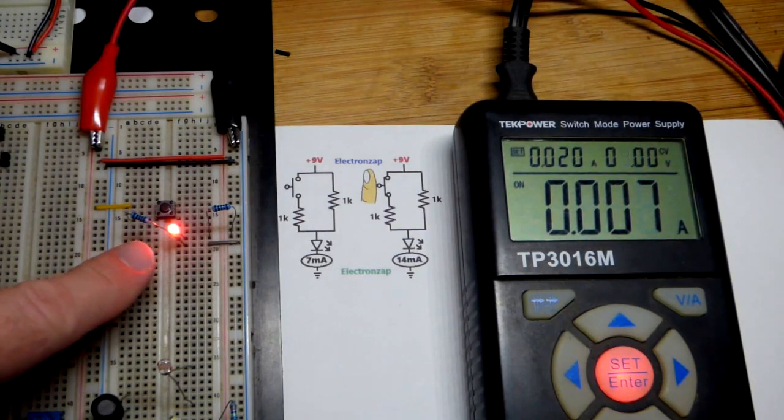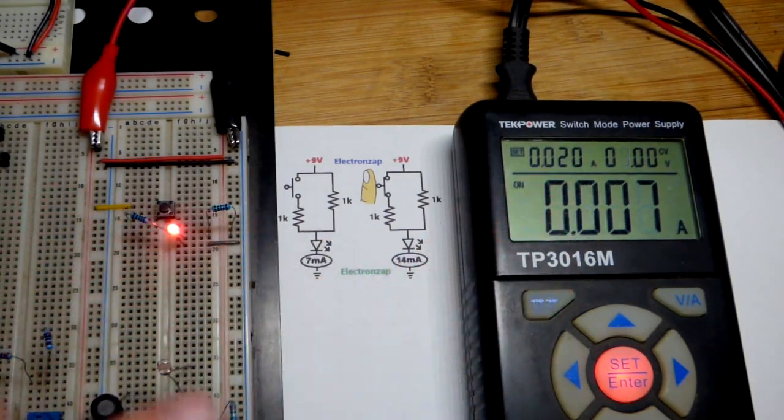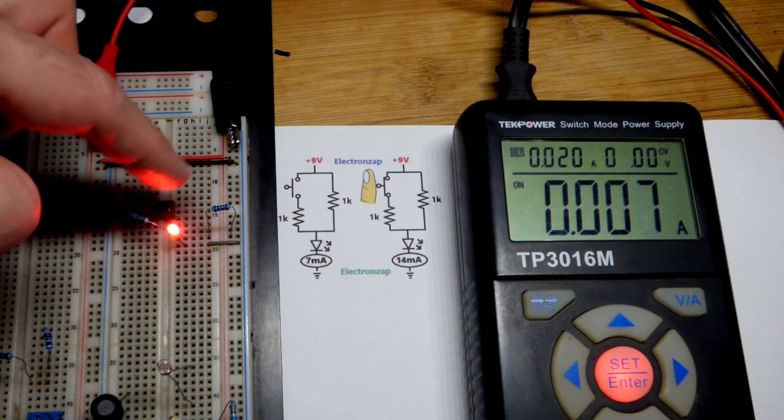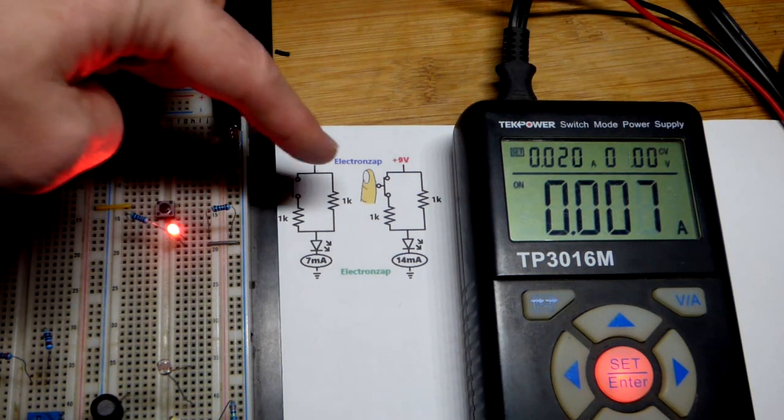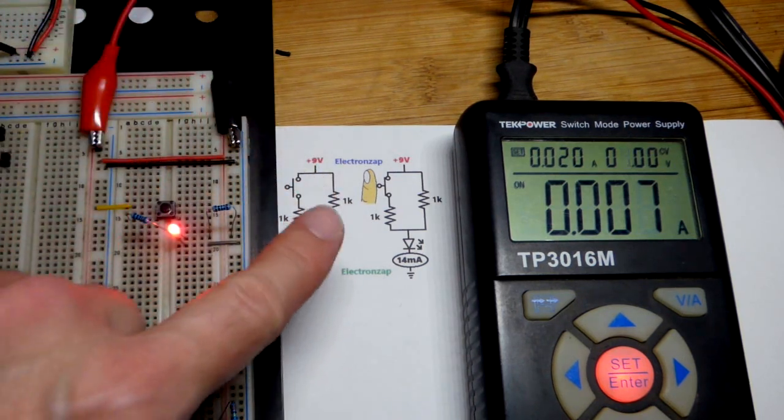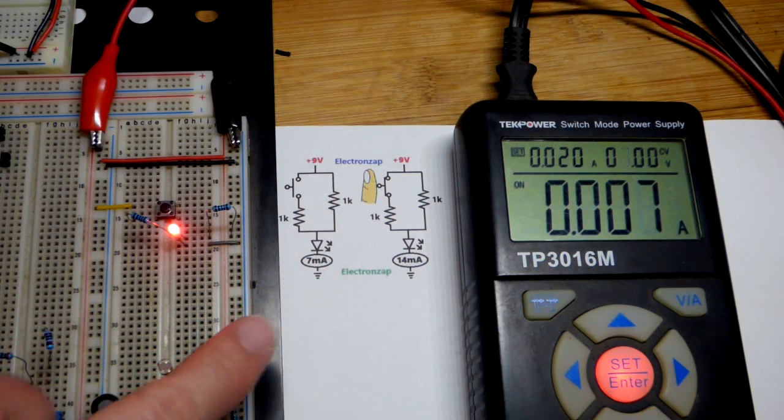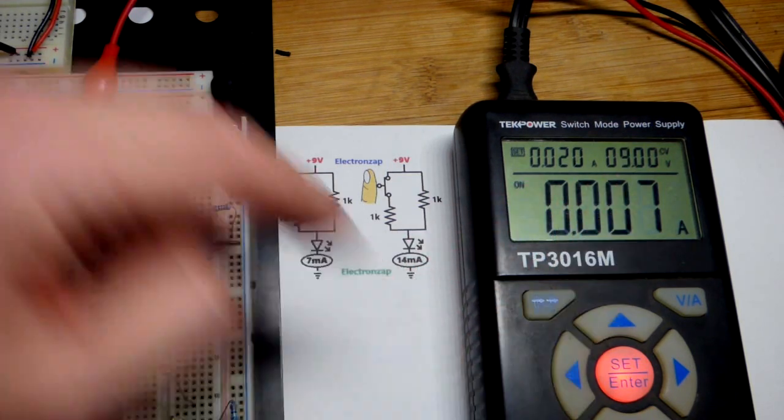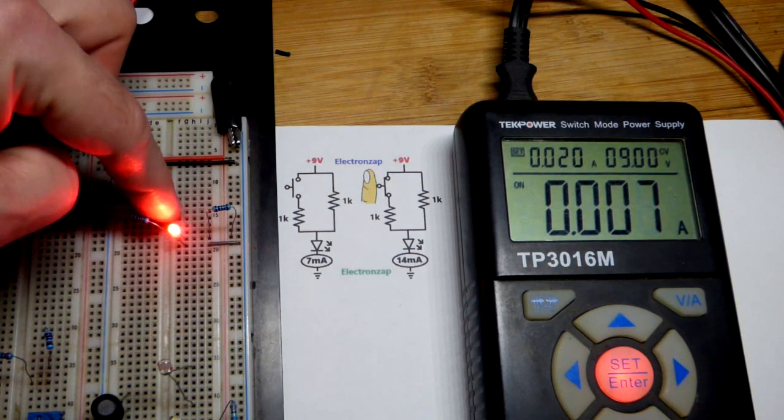In this video we have an LED that's always on as long as the power supply is on. We have a switch here, so right now current's going through one 1000 ohm resistor and the LED has approximately 7 milliamps of current flowing through it because we're using 9 volts.